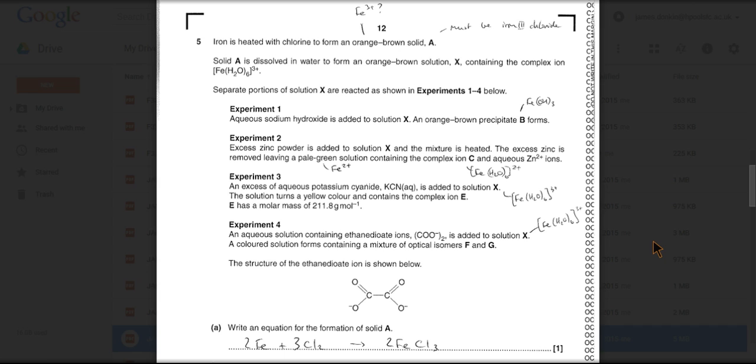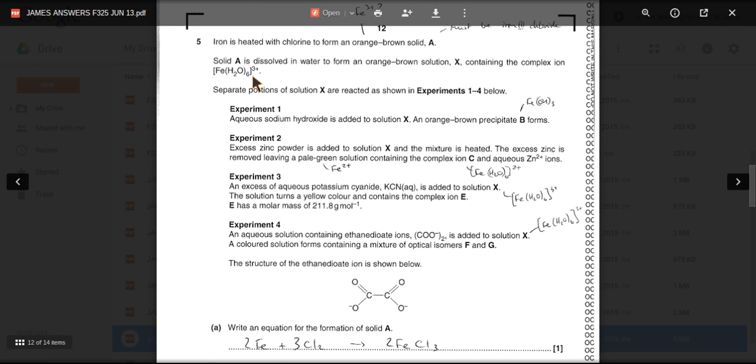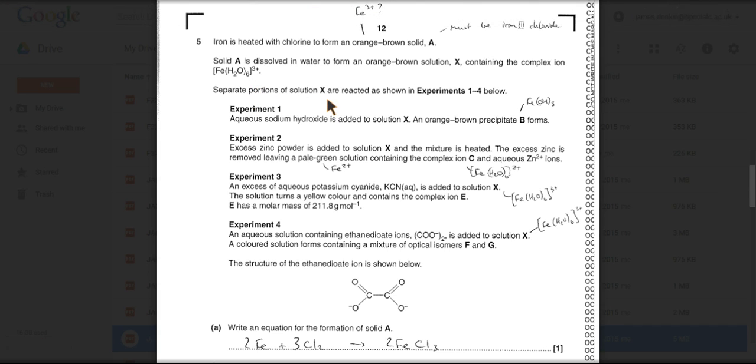Solid A is dissolved in water to form an orange-brown solution X containing the complex ion Fe(H2O)6^3+. Well, they told you that it's 3+ there, then haven't they? Separate portions of X are reacted in experiments one to four below.